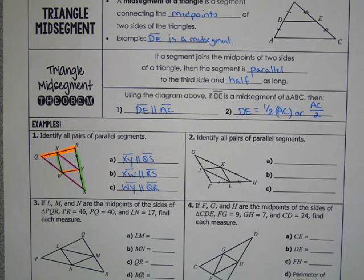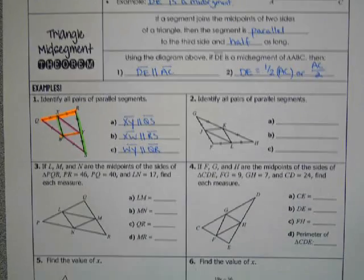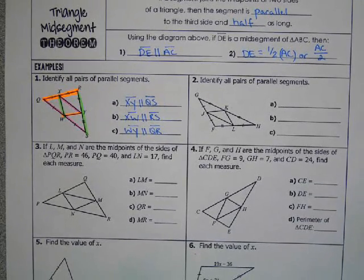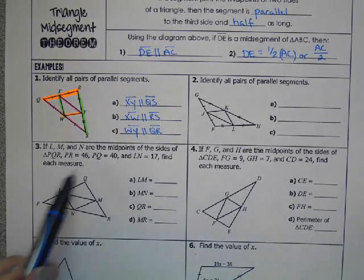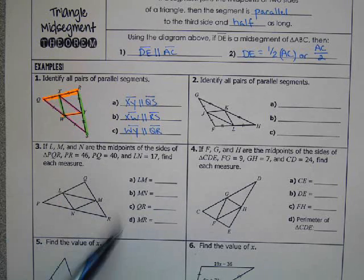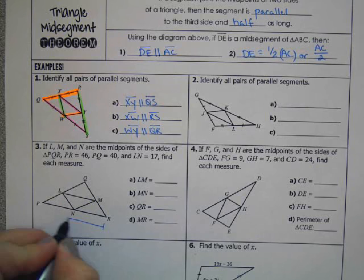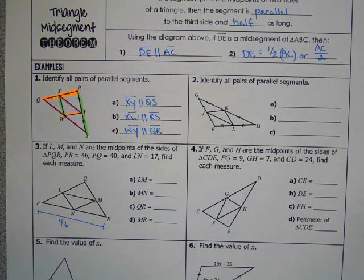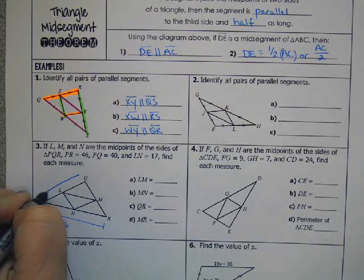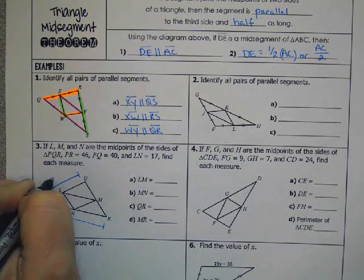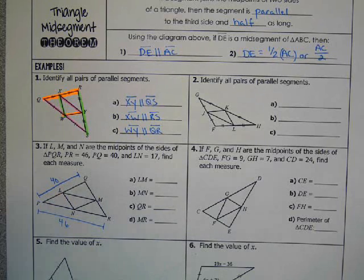So let's look at an example where we have numerical values. It always helps to take the numbers and place them in the diagram, so you're not working blind. So PR, that's that whole segment, is 46. PQ is 40, and LN is 17.